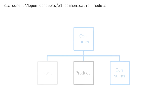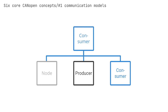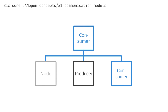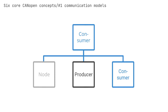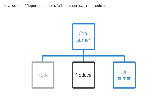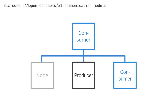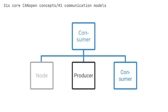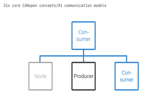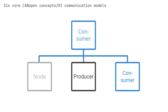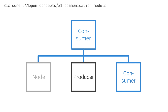Number three: consumer-producer. Here, the producer node broadcasts data to the network, which is consumed by the consumer node. The producer either sends this data on request (pull model) or without a specific request (push model). As evident, the models are practically identical, but we distinguish between them for terminology consistency.